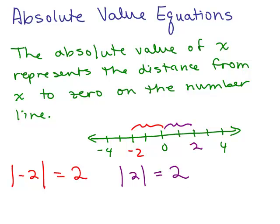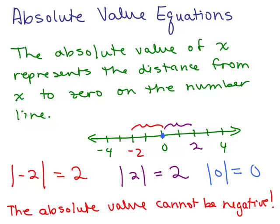Since we're talking about distance, keep in mind that you can't get a negative number. If you're counting spaces, you can't count a negative. So the absolute value cannot be negative — but could it be 0? What's the absolute value of 0? Well, here's 0, it's right on itself, so how far is 0 from 0? It's 0. So the absolute value of something cannot be negative.